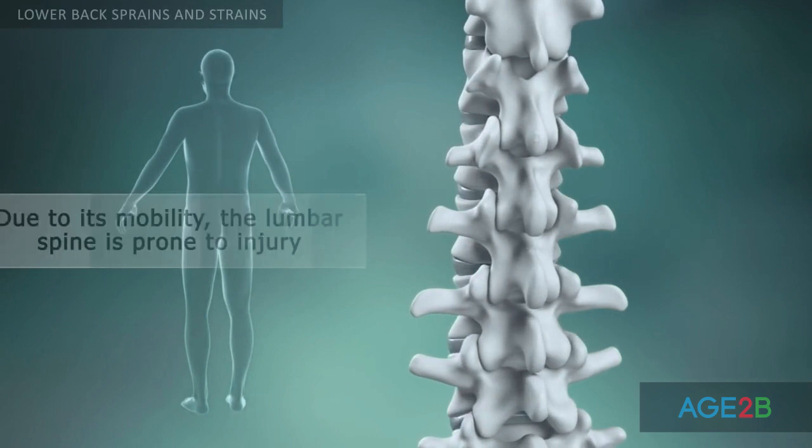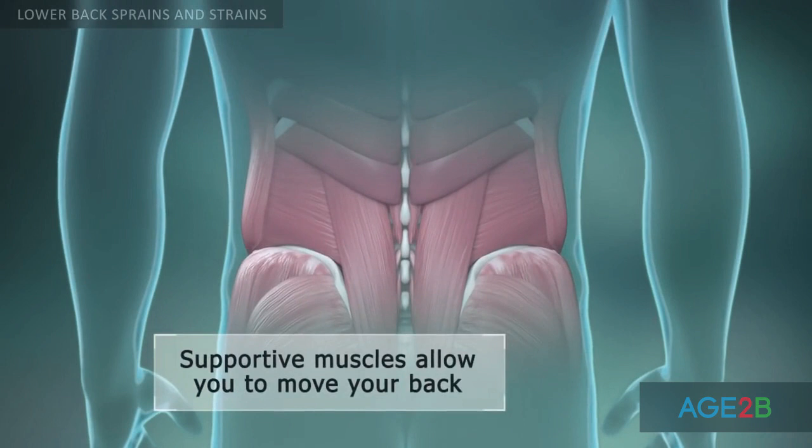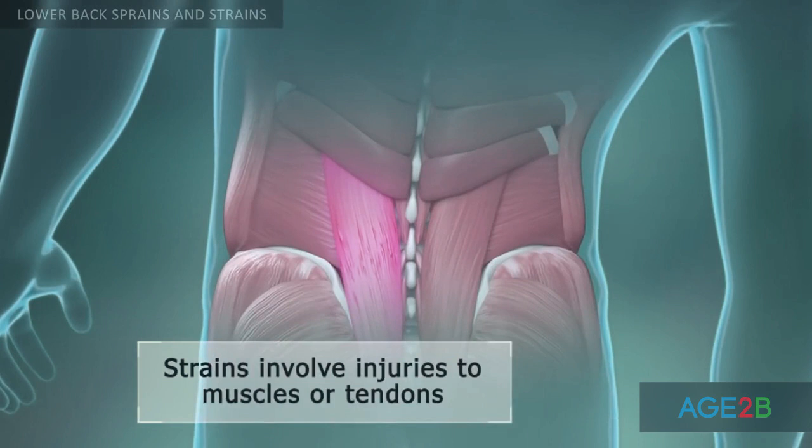The lumbar spine bears much of the body's weight, which is why it is prone to various injuries. Complex systems of back muscles work together to allow movement and support your spine. Low back strains occur when muscles or tendons are injured.